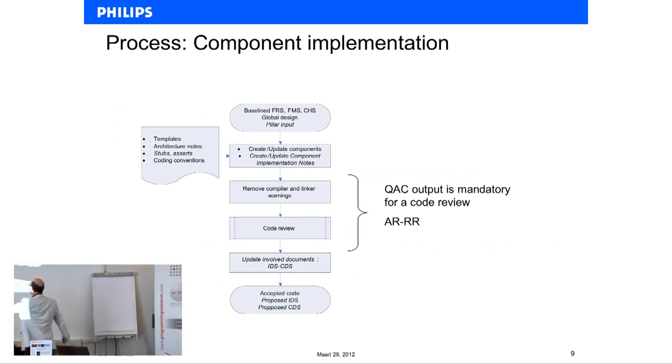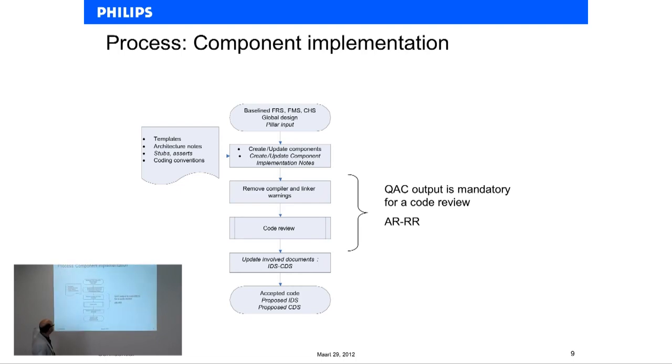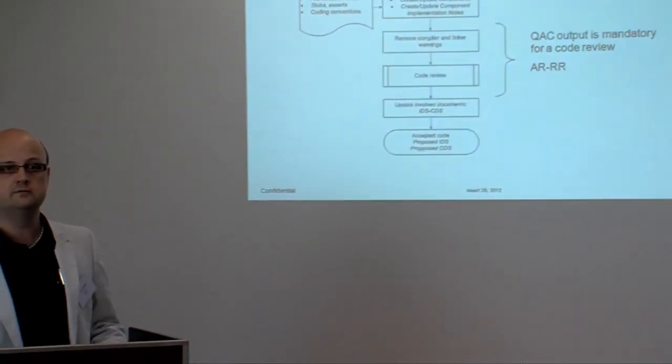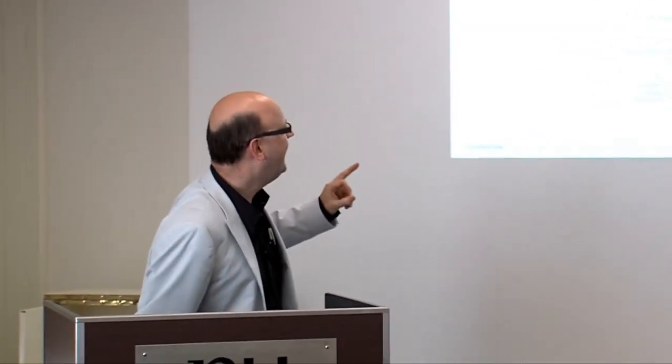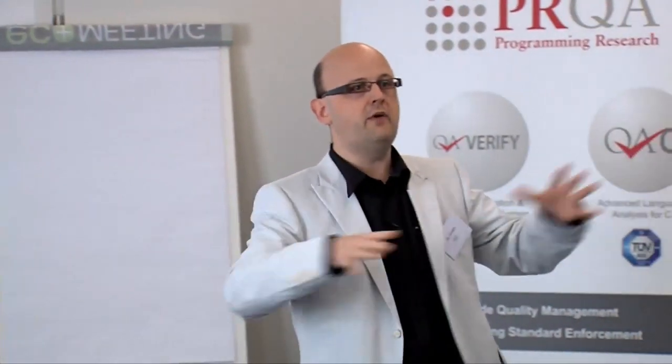This is our process. You have the specification at the top, then we create or update components, remove compiler and linker warnings, do a code review, and eventually update involved documents. QAC output is mandatory for a code review. We have AR — absolute review — and RR — relative review. For a small change, we ask a colleague who knows the code and functionality to review it, and if he says it's okay, it's noted at check-in. For a big change, we have a peer or paper review with three to ten people doing a full review.